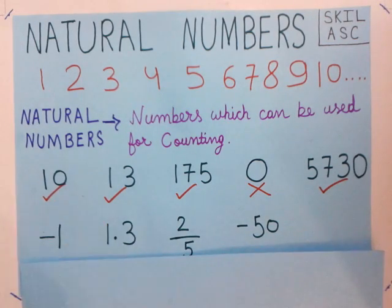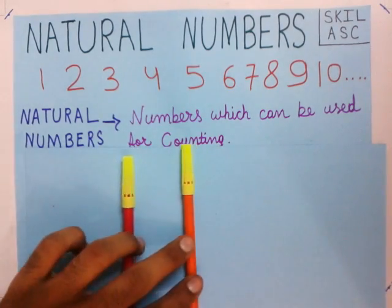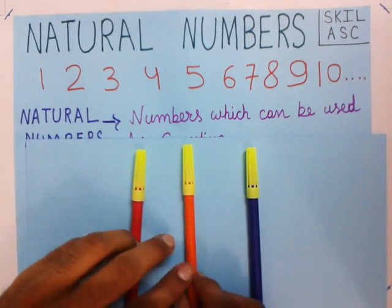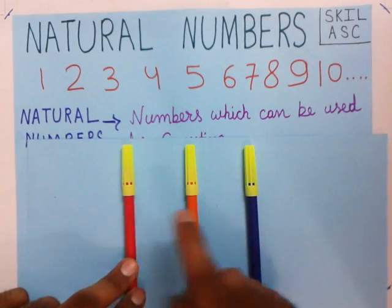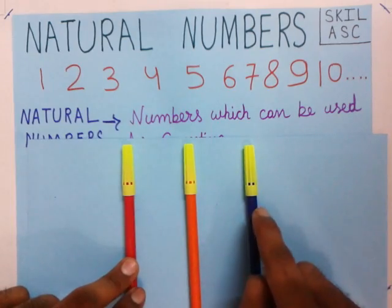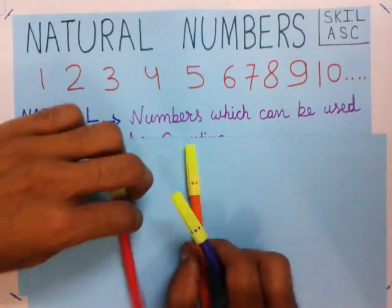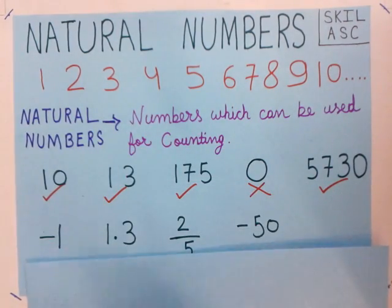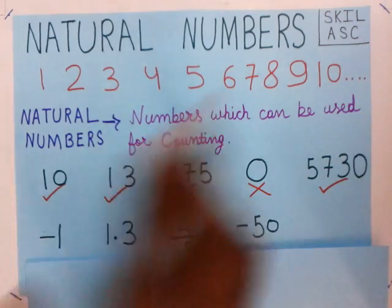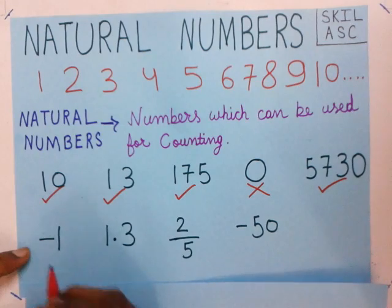Now consider minus one — this is a negative number. I have three colors and we count as one, two, three. We don't say minus one, minus two, minus three. We don't use negative numbers while counting, so negative numbers are not natural numbers because they are not used while counting.